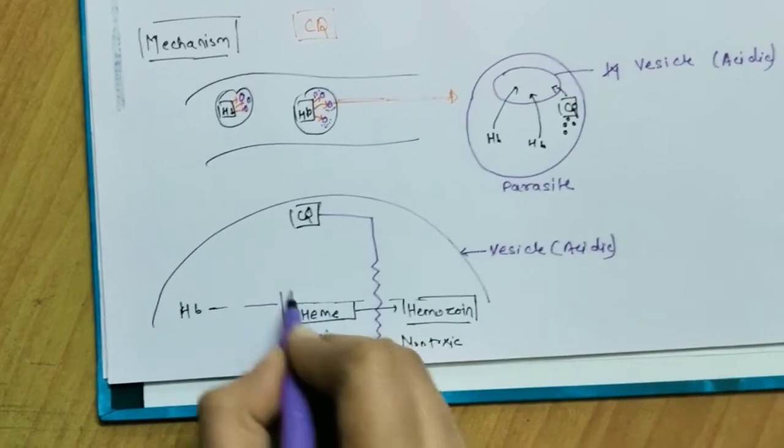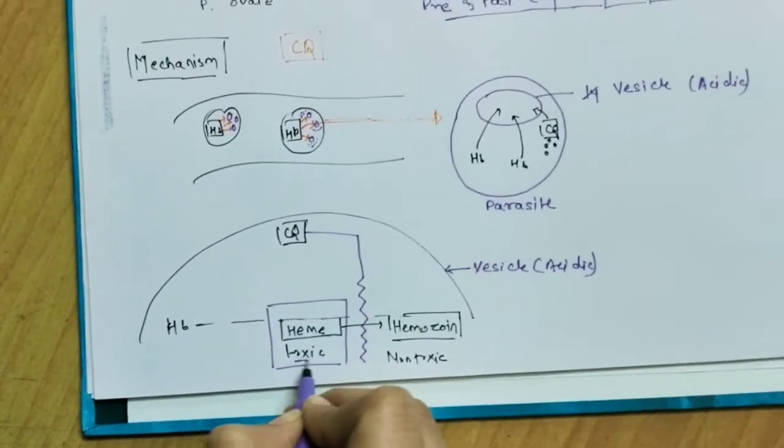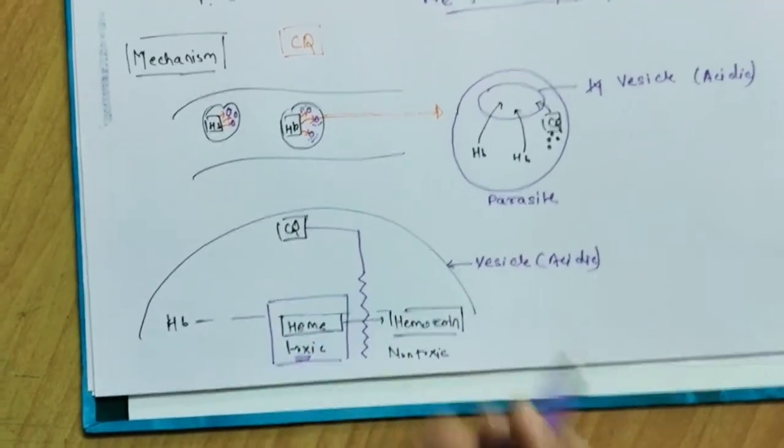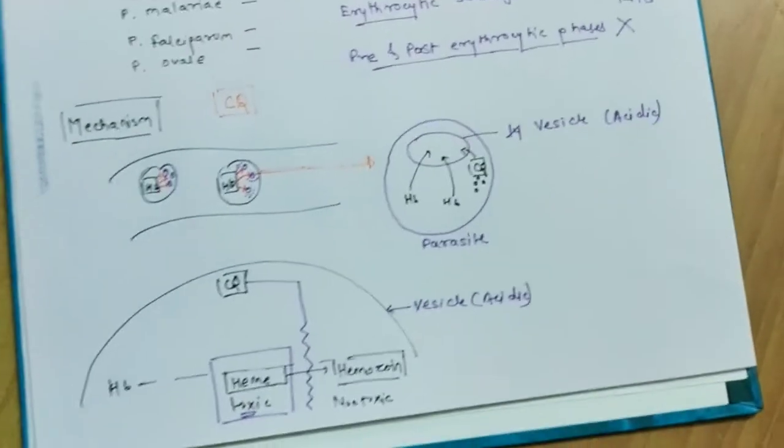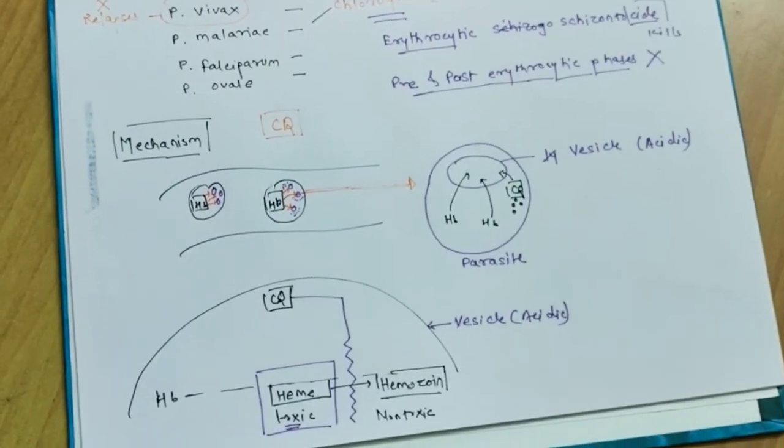So the toxic heme gets accumulated inside the vesicle and hence it is toxic actually to the parasite. So it's degraded.